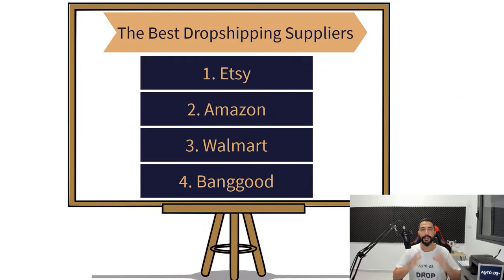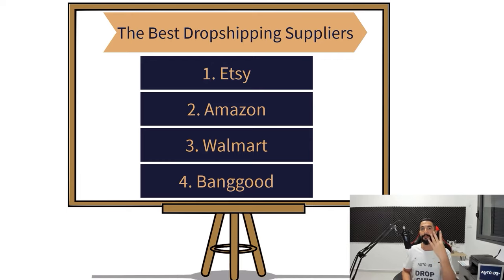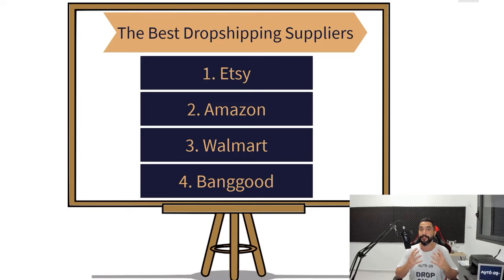So those are the four dropshipping suppliers I recommend you work with. Go inside each one of their sites right now, especially the ones you haven't heard about. Learn about them, see how fast they ship their products, and make sure they're shipping from the United States. This is where you're going to find the best dropshipping products to source with the best shipping times and very easy, convenient customer service. So we have Etsy, Amazon, Walmart, and Banggood — the top four US suppliers to work with on your dropshipping stores. Bookmark them. In the next lesson, we're going to learn about how to find the best dropshipping products in the Shopify stores you spied on.